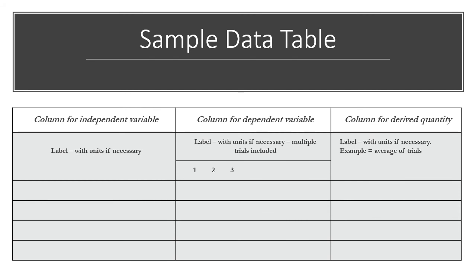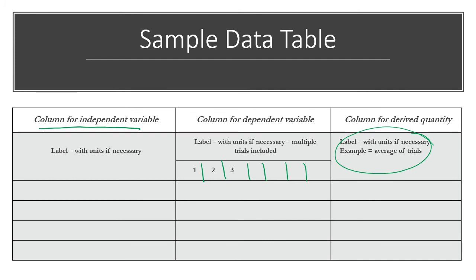And then when we go to record our data, data tables are hugely important. Okay. So usually a data table will be formatted something like this. You'll have a column for your independent variable and then a column or several columns for your dependent variable, depending on if it's a time thing or how many trials you have. And then usually at the end, we want to average it or figure out what's the total difference in temperature, things like that.